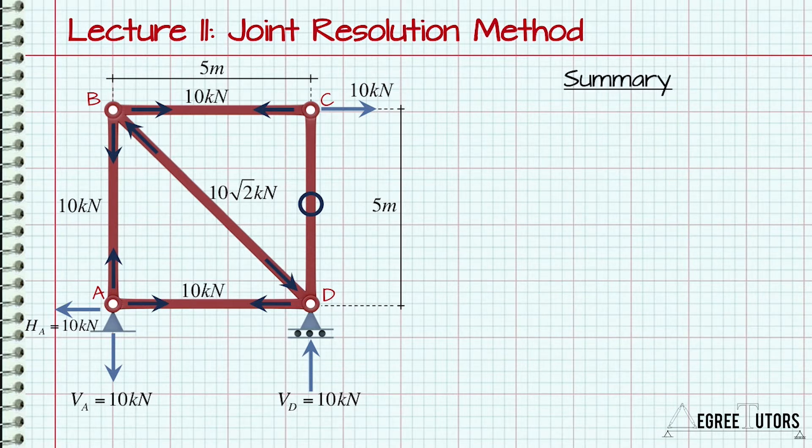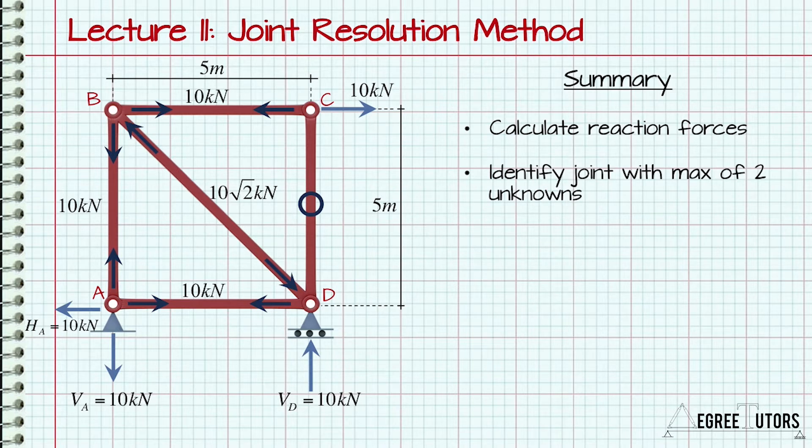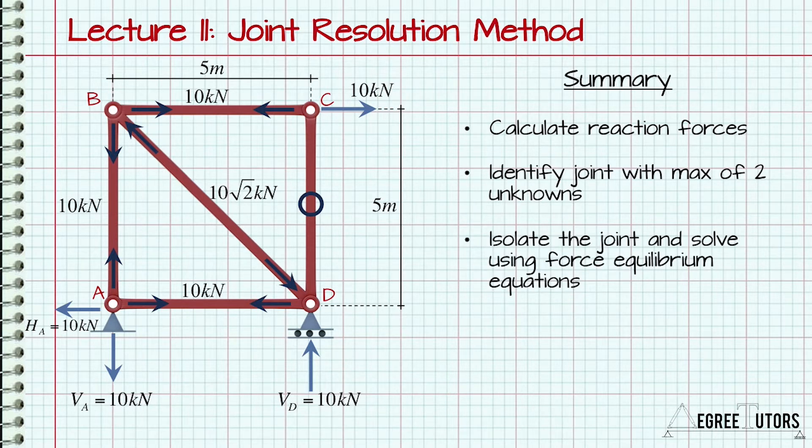So, to summarize, the first step is to calculate the reaction forces using our three equations of equilibrium. Next, we identify a joint that has a maximum of only two unknowns. You can think of this as our entry point into the problem. We then isolate that joint, cutting the members entering the joint to reveal their internal member forces. At this point, we can use our two force equilibrium equations to determine the unknown member forces. Then we simply move joint by joint through the structure, in each case tackling joints with only one or two unknowns.